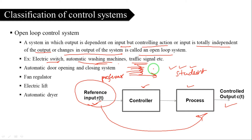A traffic signal is also an open-loop controlling system. The traffic signal cycles through green and red signals on a fixed timer. However, it does not respond to actual road conditions — for example, if an ambulance has an emergency case, the traffic signal does not automatically change. This is why it is classified as an open-loop control system.